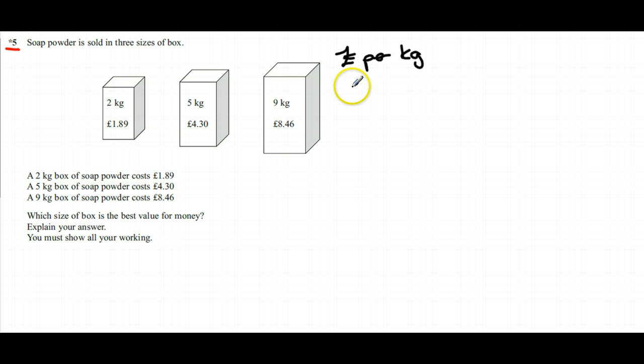So I'm looking for the lowest answer. To do that, because it says per, I do pounds divided by kilograms. For the 2 kilogram box, I'm going to do 1.89 divided by 2, and that gives me 0.945 per kilogram.